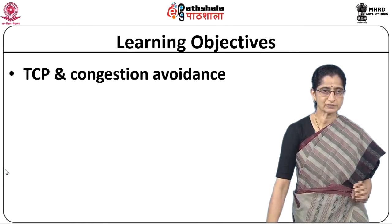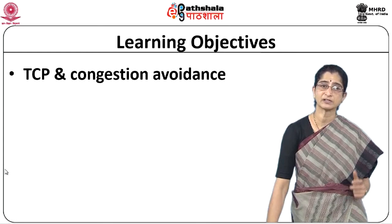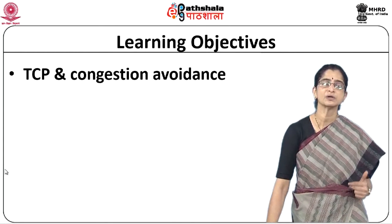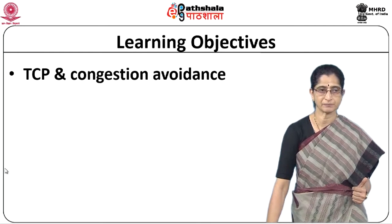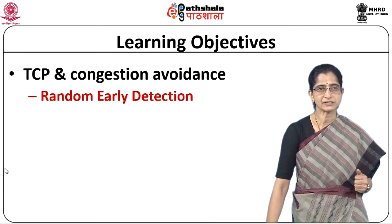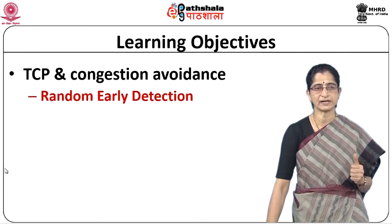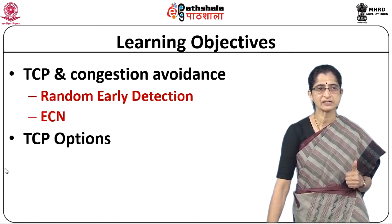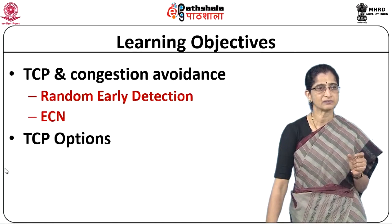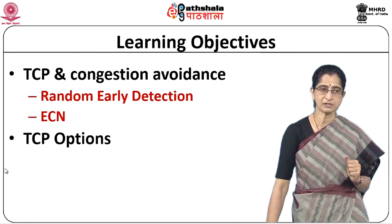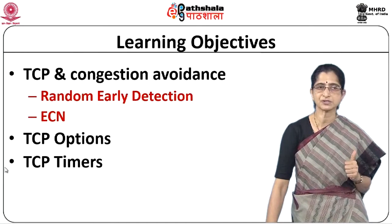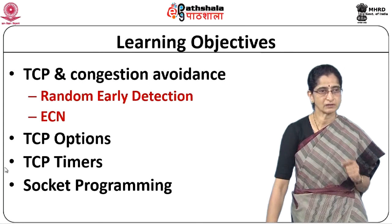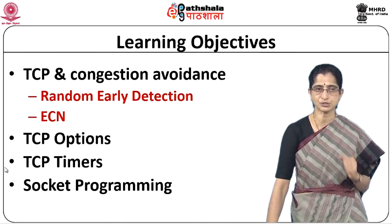We will start off with TCP and congestion avoidance. We have looked at congestion control mechanisms of TCP in detail, so we will look at how congestion avoidance is added to TCP. We will also look at random early detection and ECN techniques, various options available in TCP, how timers are managed in TCP, and conclude with an introduction to socket programming.